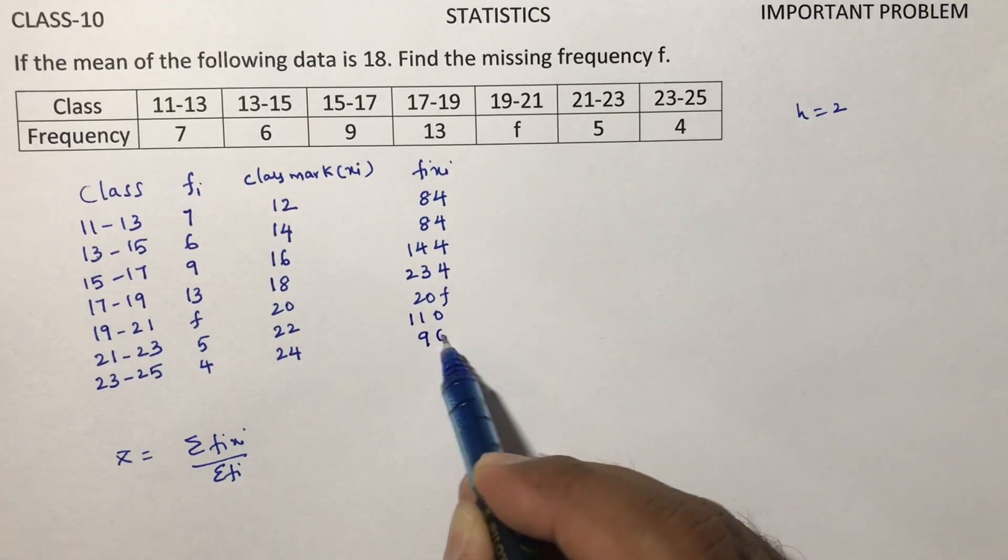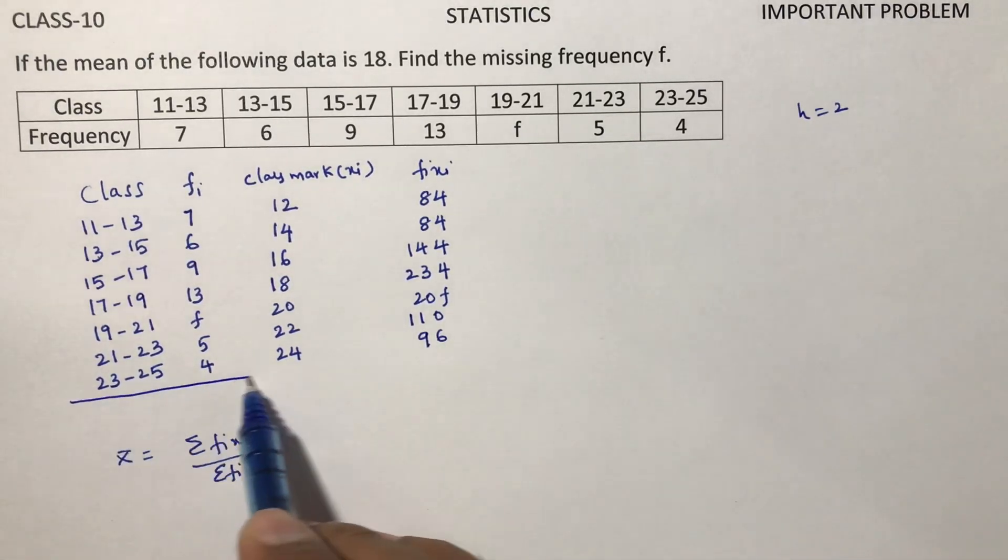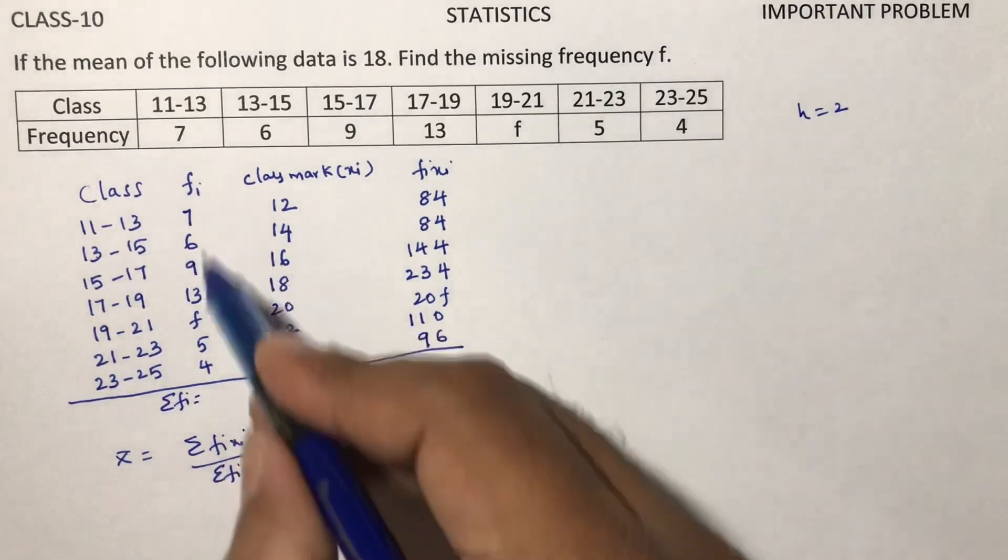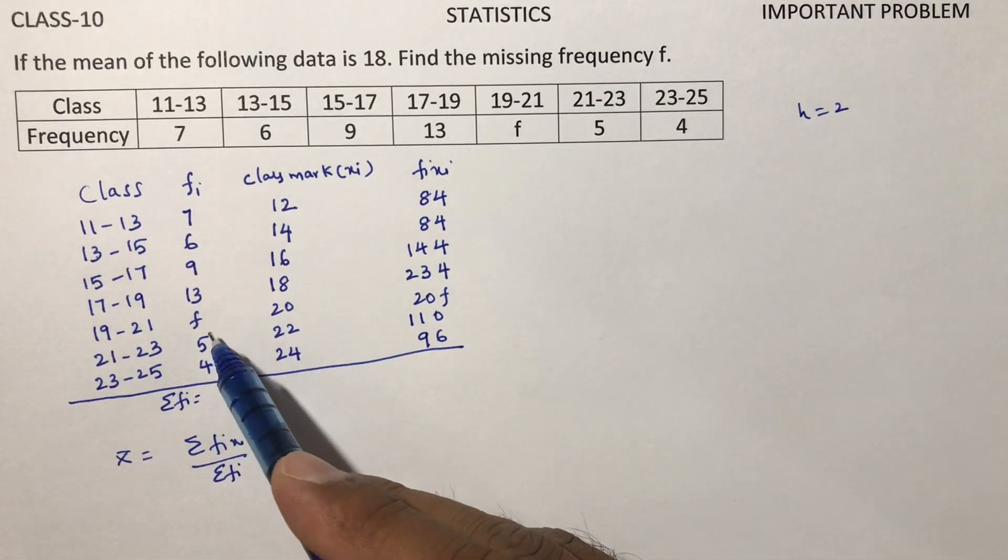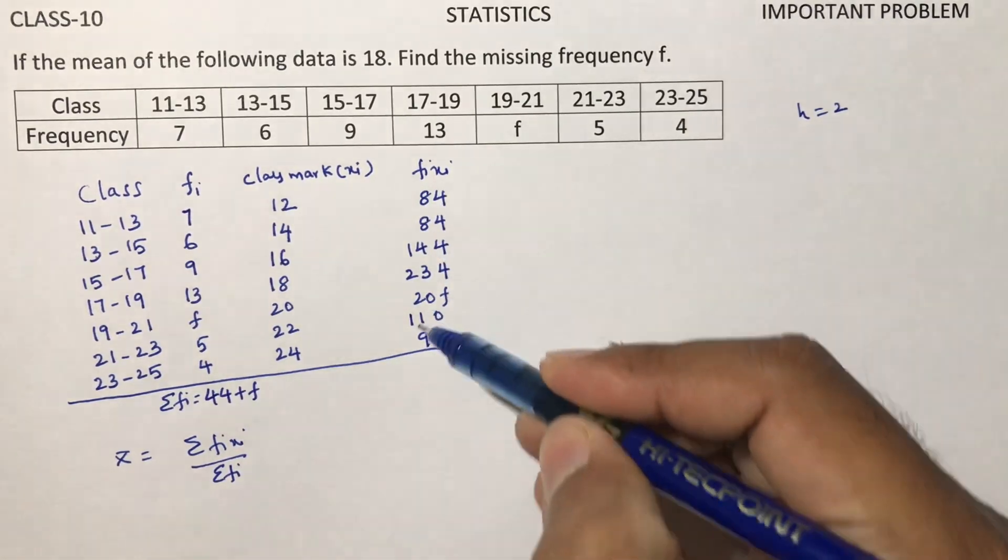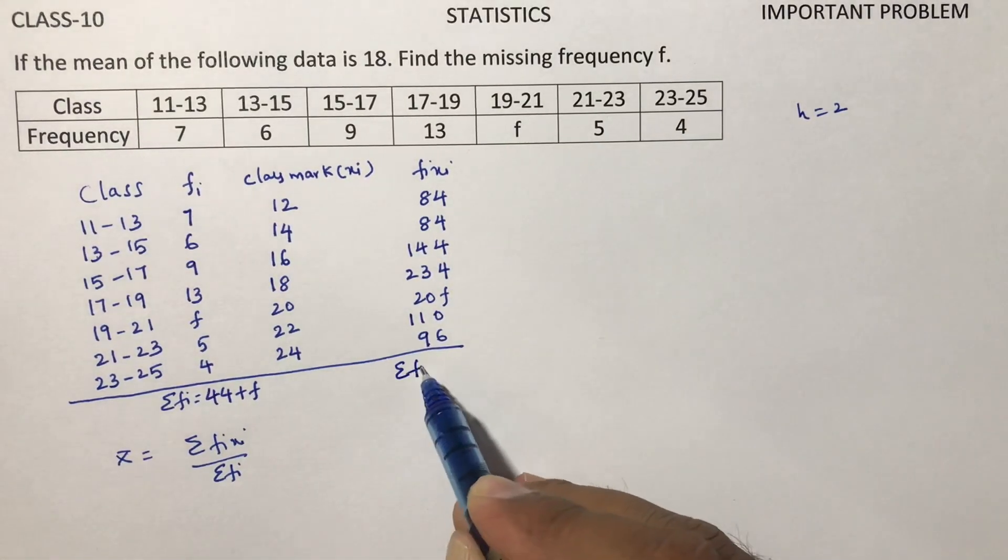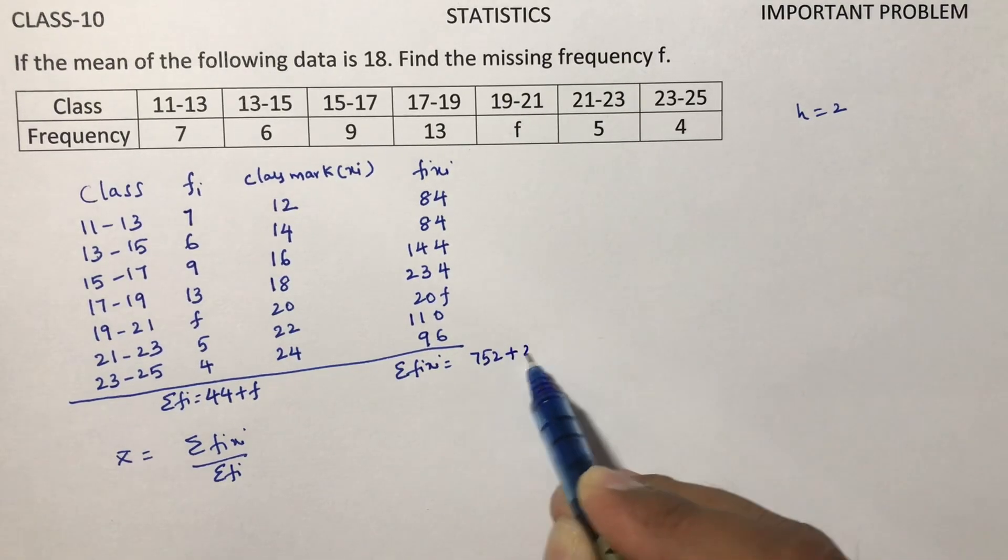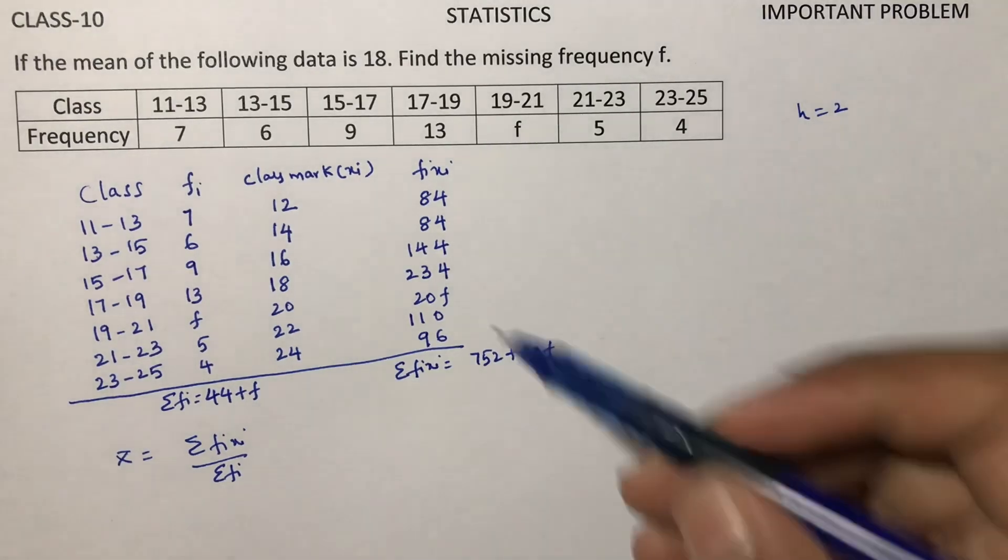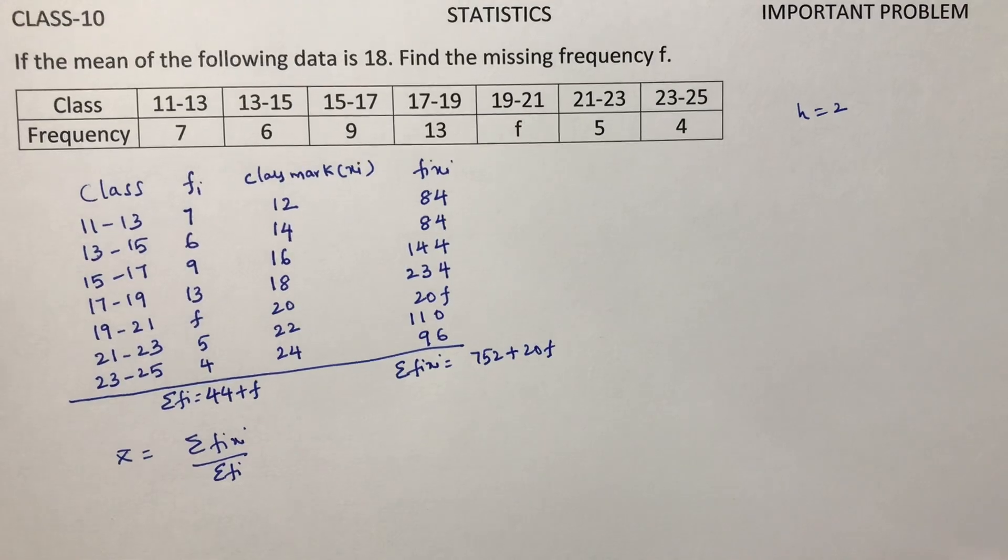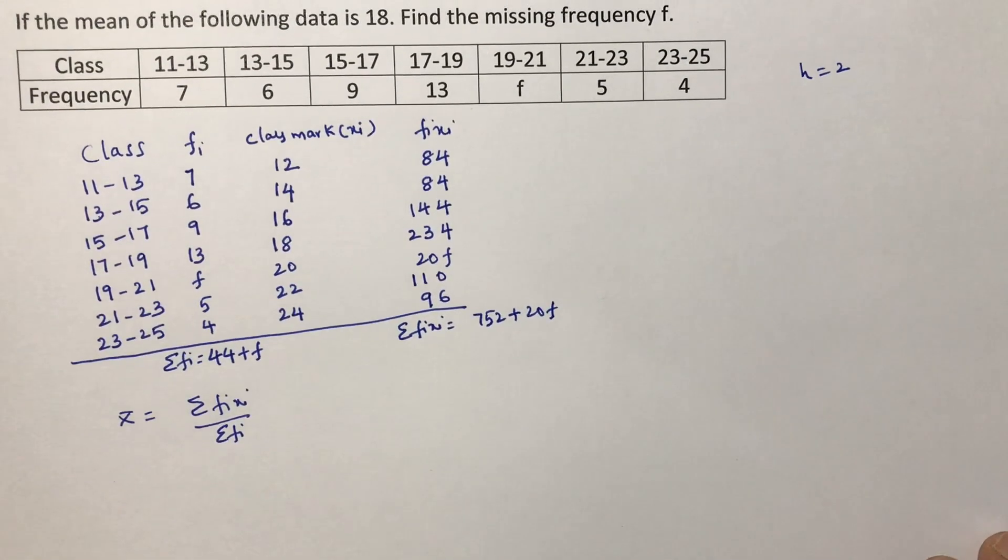Sigma Fi: total frequency if I add, you'll get 44 plus F. If you add all these values, you'll get sigma Fi Xi as 752 plus 20F. All the values will add up to 752 plus 20F.